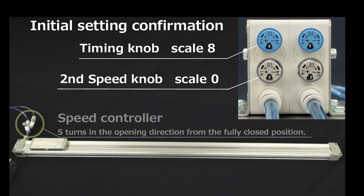The speed controllers for adjusting the first speed must be set to position 5 turns in the opening direction from the fully closed position.